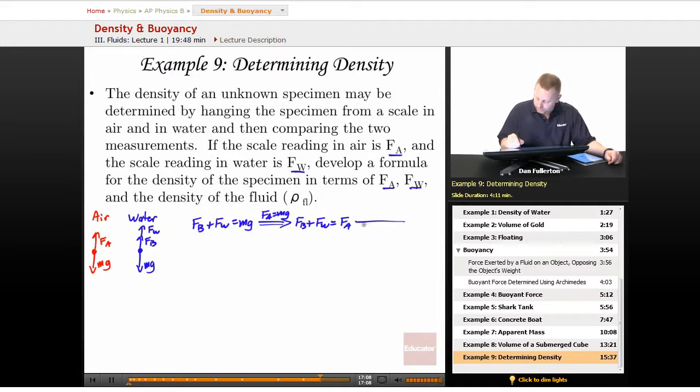But that buoyant force is equal to ρ_fluid VG. So I could rewrite this then as FA minus FW with a little bit of rearranging must equal density of our fluid times the volume displaced times G.